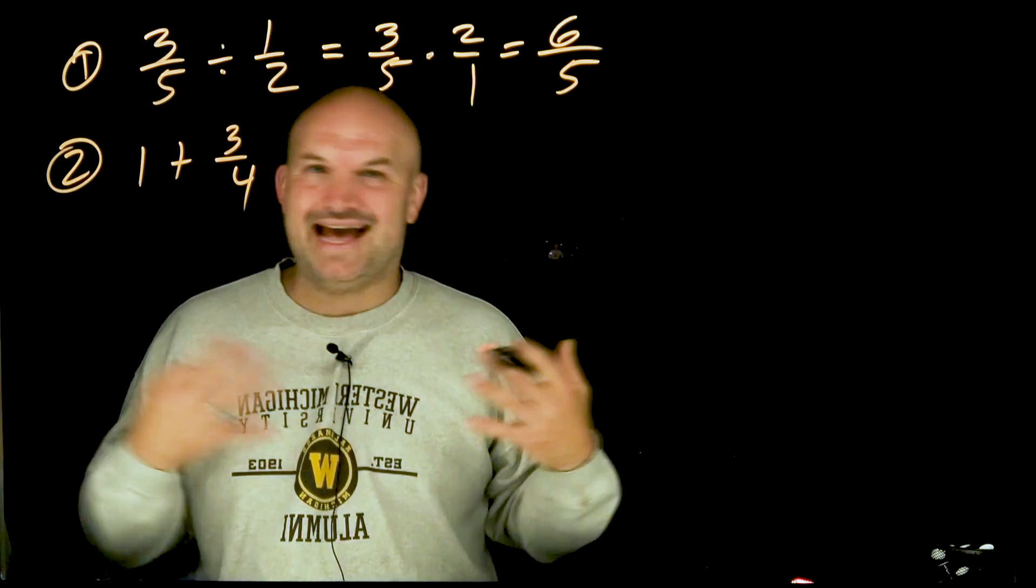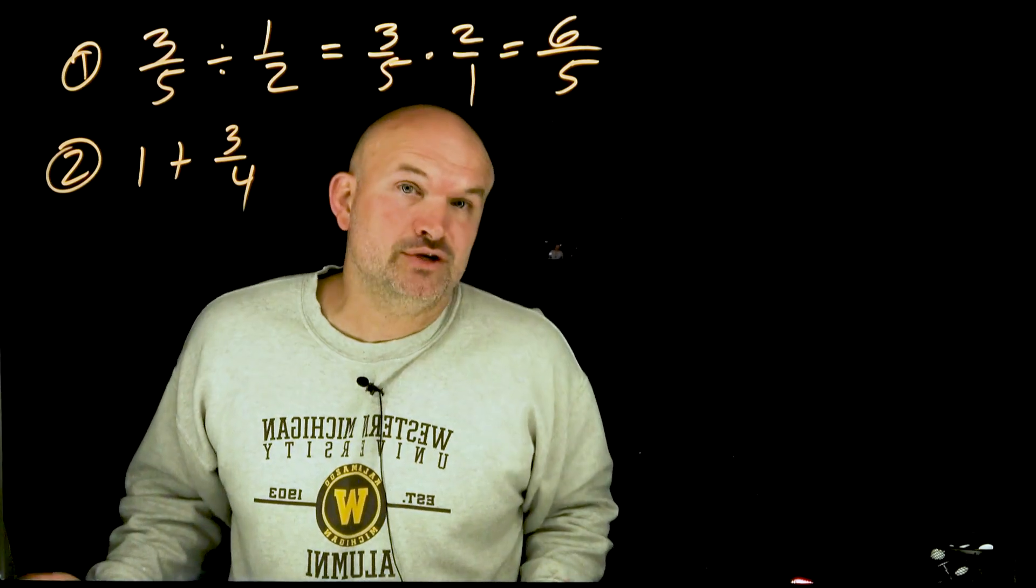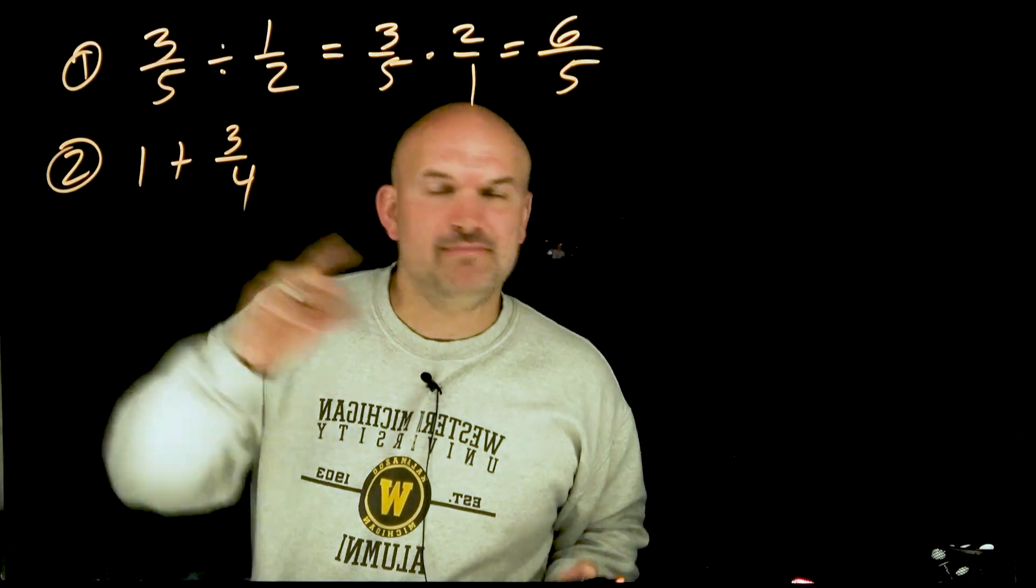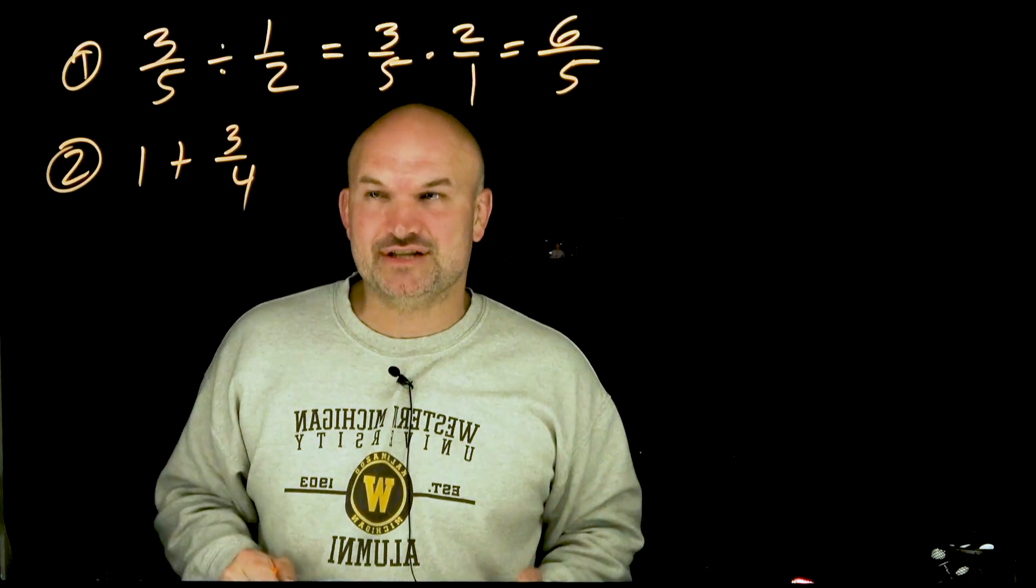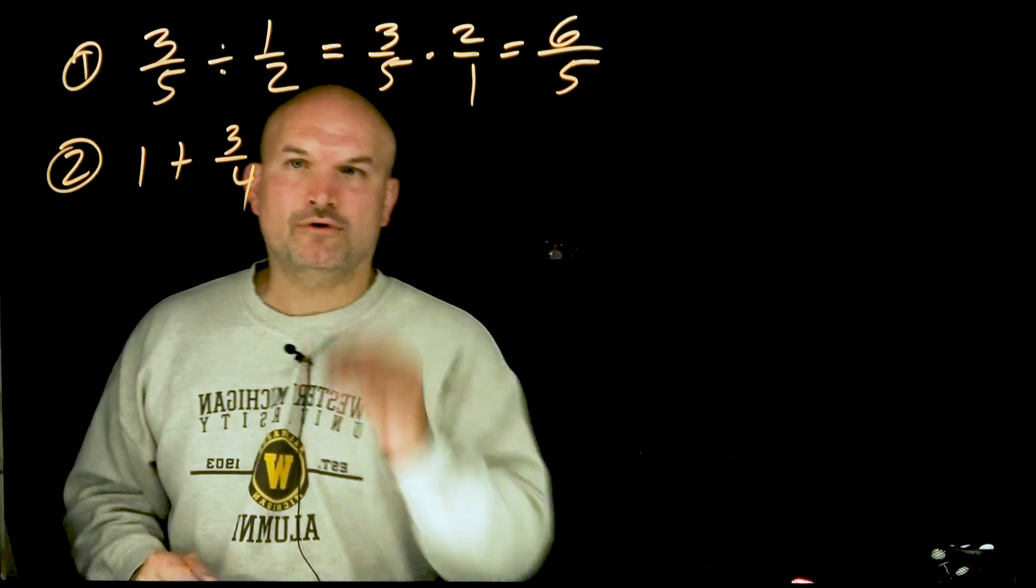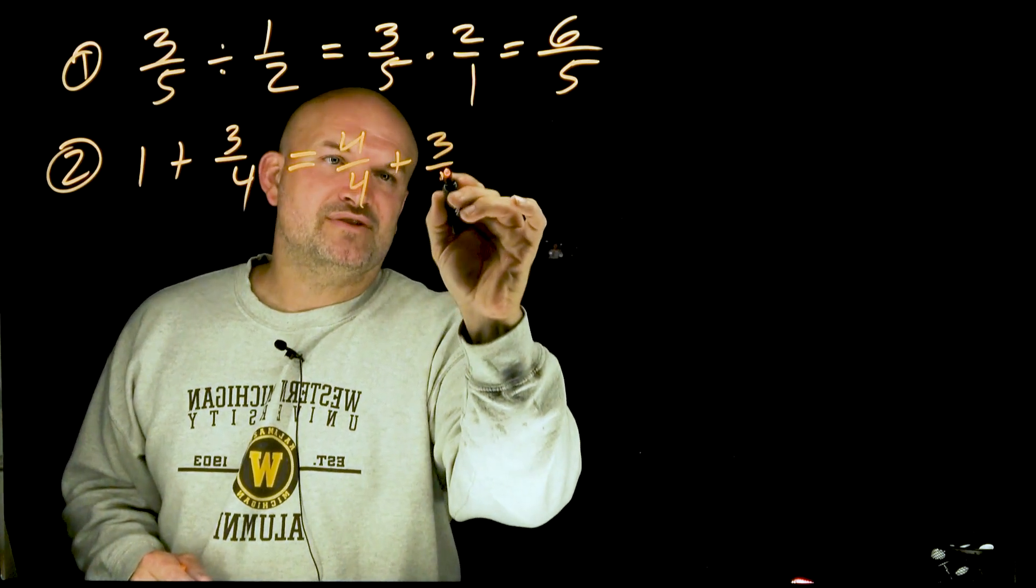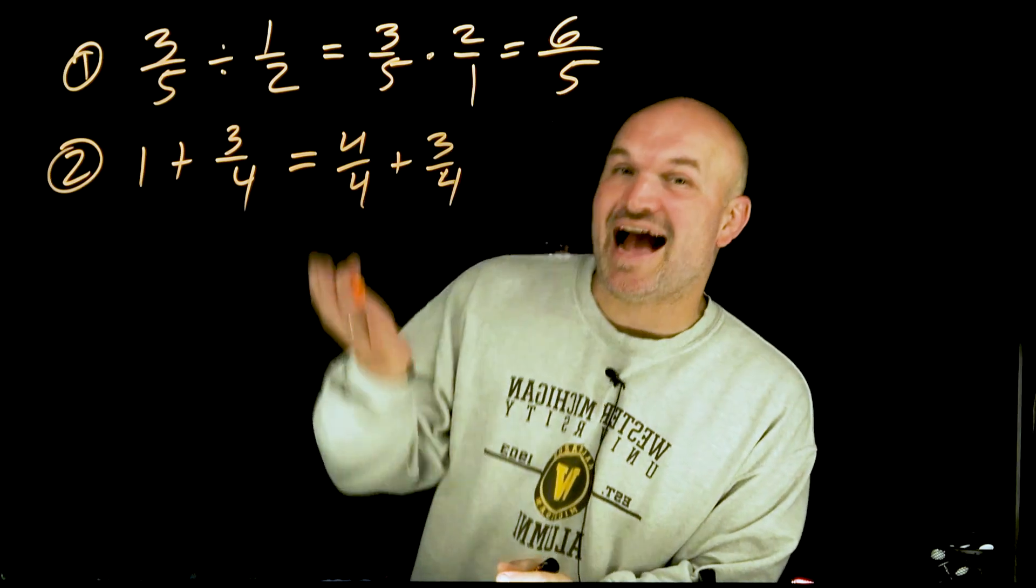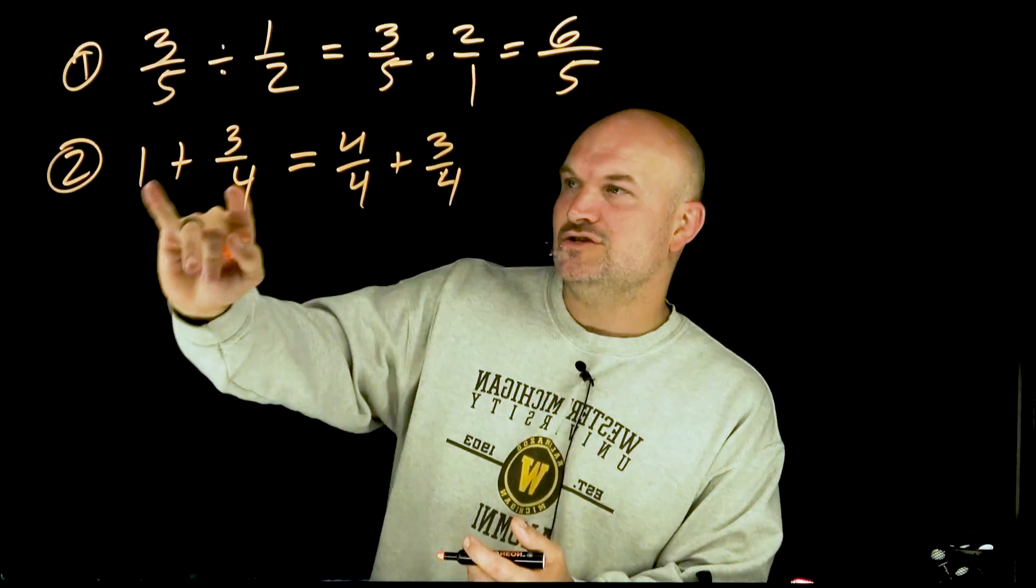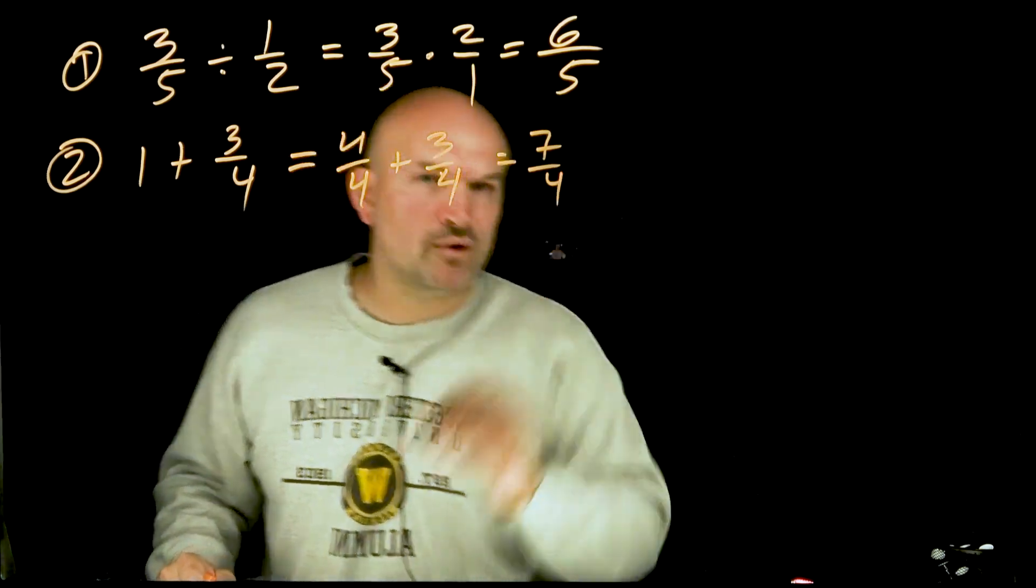When I immediately see one plus three fourths, I'm immediately thinking this is just going to be four over four plus three fourths. And remember when you are adding fractions, you're just going to be adding the numerator, you're keeping the denominator the same. So I immediately look at this and I think four over four, and then I say four plus three, that is going to be seven fourths.